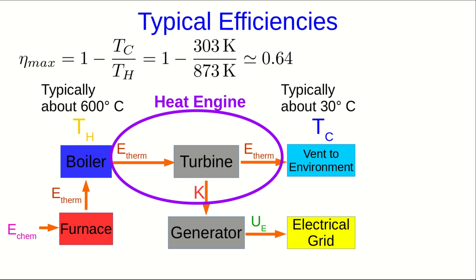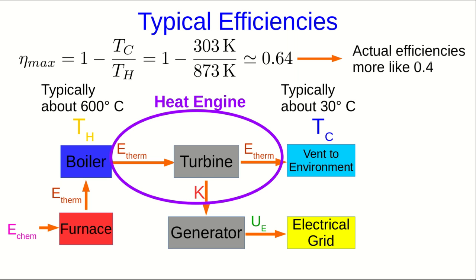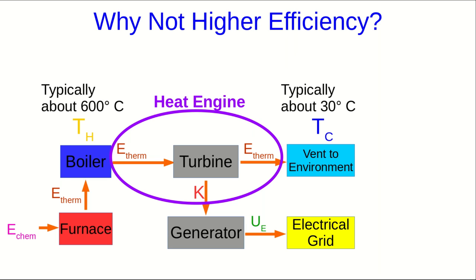Using the Carnot efficiency equation, we get an estimate of about 64%. Note that the Carnot efficiency is a theoretical maximum — no actual heat engine can ever achieve this. Indeed, actual efficiencies for power plants using this sort of arrangement are typically around 40%. We know we can improve efficiency by either lowering TC or raising TH, so a pretty logical question is: why don't we just do this?